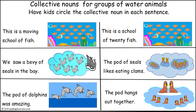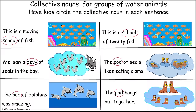Now have kids circle the collective noun in each sentence. This is a completed example. 'This is a moving school of fish' — school is the collective noun. 'We saw a bevy of seals in the bay' — bevy is the collective noun. 'The pod of dolphins was amazing' — pod is the collective noun. 'This is a school of 20 fish' — school. 'The pod of seals likes eating clams' — pod. And 'The pod hangs out together' — pod is the collective noun.